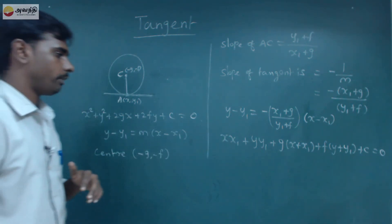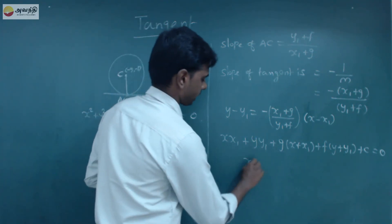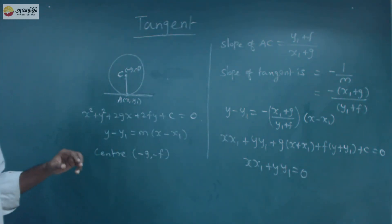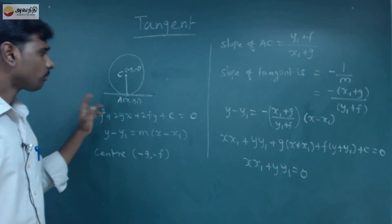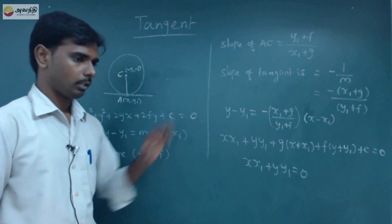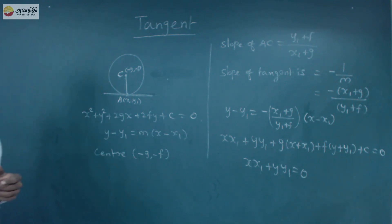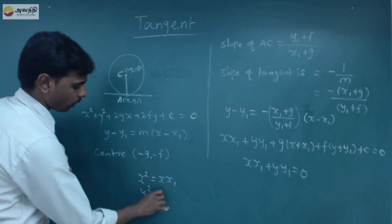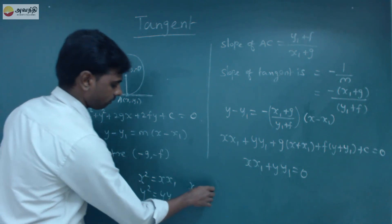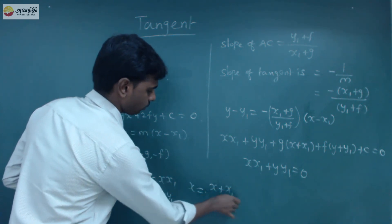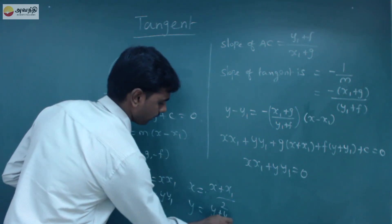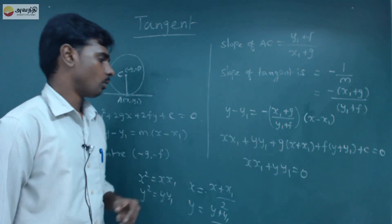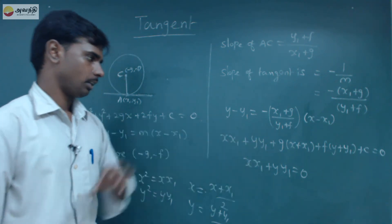Suppose this is the origin. We solve this tangent: xx1 + yy1 = 0. That is the tangent equation. To solve this equation: x² becomes xx1, y² becomes yy1, and x becomes (x + x1)/2, y becomes (y + y1)/2. Substitute this value in the circle to solve the tangent equation.